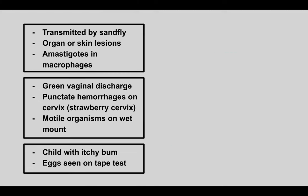The next patient has an infection transmitted by sandfly. It can cause organ or skin lesions and we see amastigotes in macrophages. This is Leishmania — the key finding is amastigotes in macrophages, and it can cause either visceral leishmaniasis or cutaneous leishmaniasis.